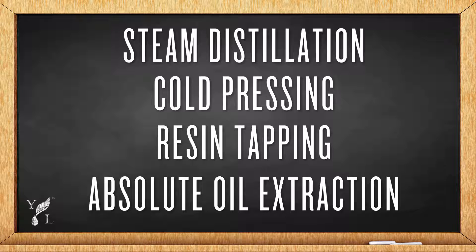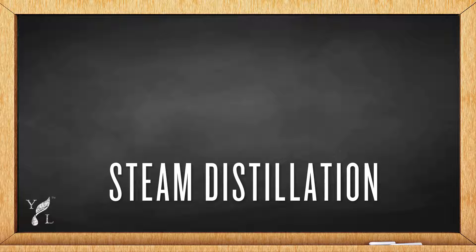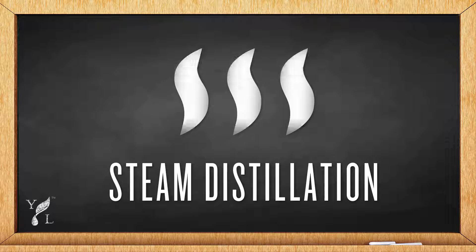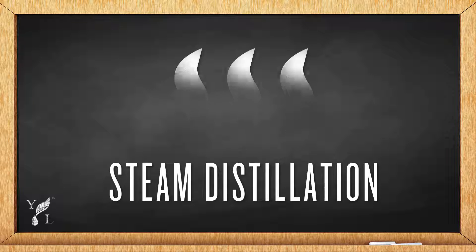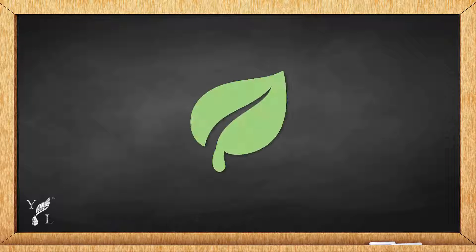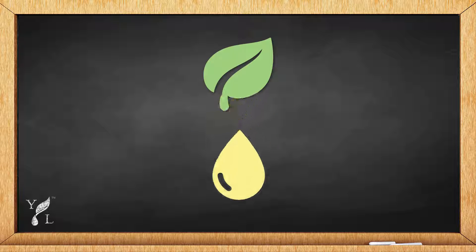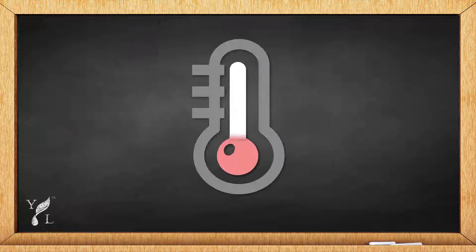Let's start with the most common of all the essential oil extraction methods, which is steam distillation. This process allows us to extract essential oils from very delicate plant materials. During the process, it's critical to control temperature and pressure to avoid burning the oils during distillation.